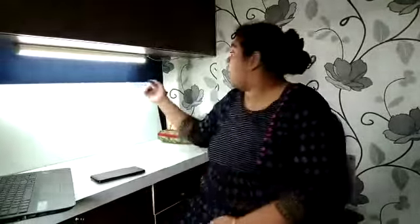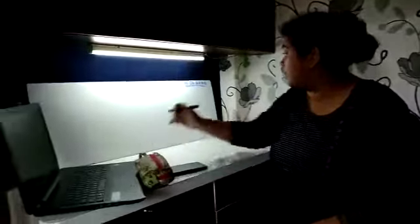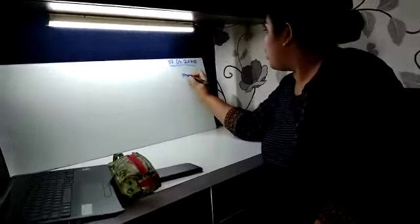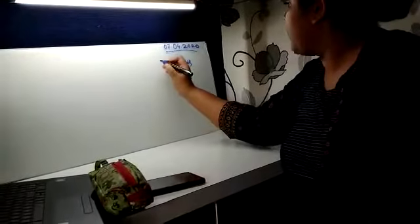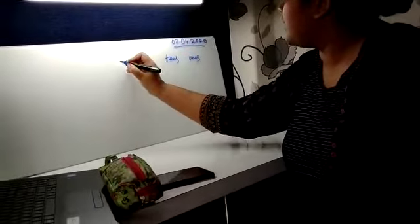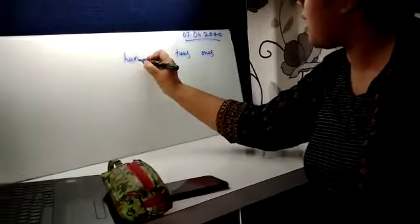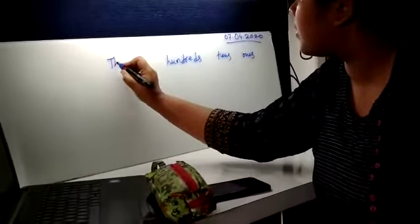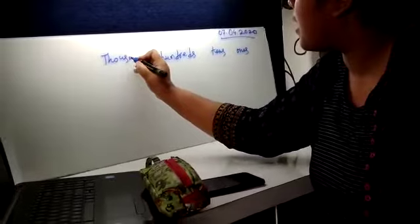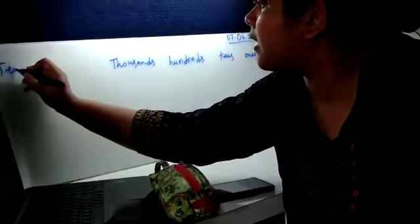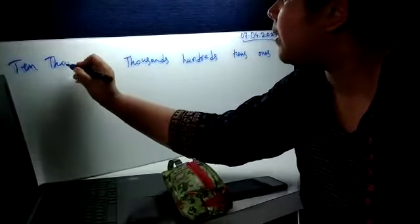First we will revise the place value chart. First we have the 1s place, then we have the 10s place, then 100s place, 1000s place and 10,000s place.